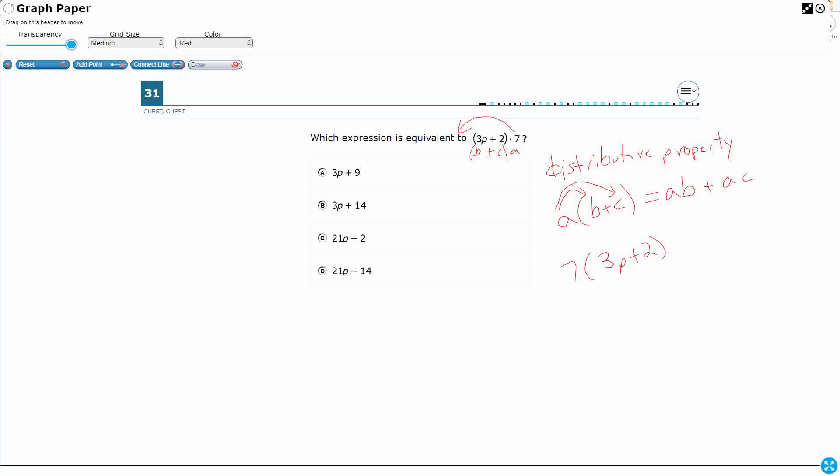Because that's the commutative property of multiplication. You can multiply two factors. In this case, this is a factor, and then this is a factor. I'm using this expression all at once. Multiply them in any order, you're going to get the same product. So look, this looks exactly like we did up here. So what I'm going to do is I'm going to distribute this out.